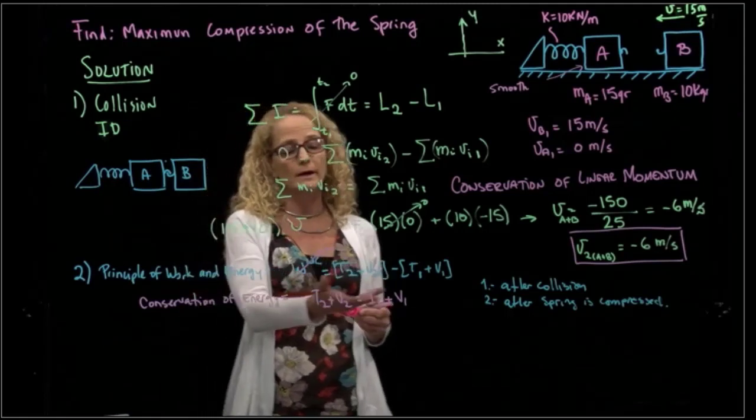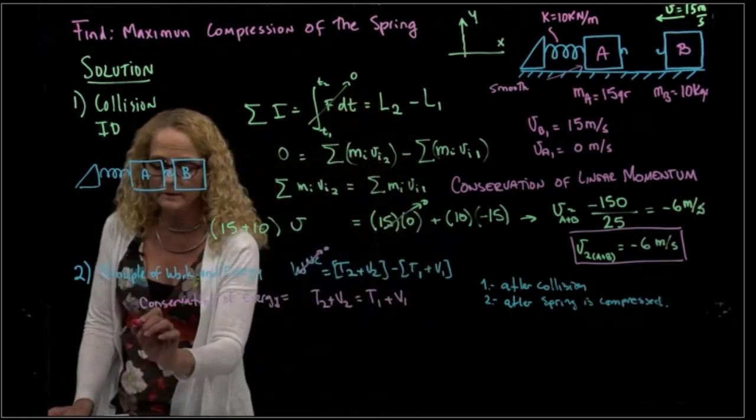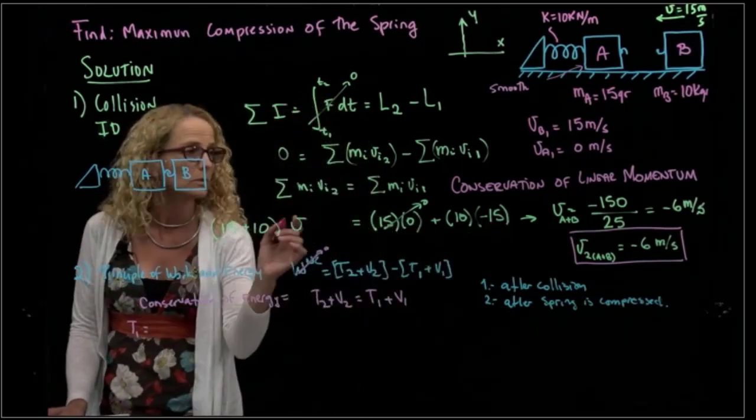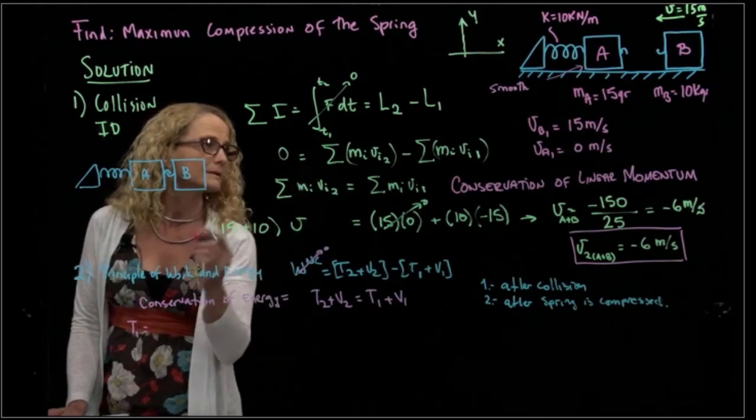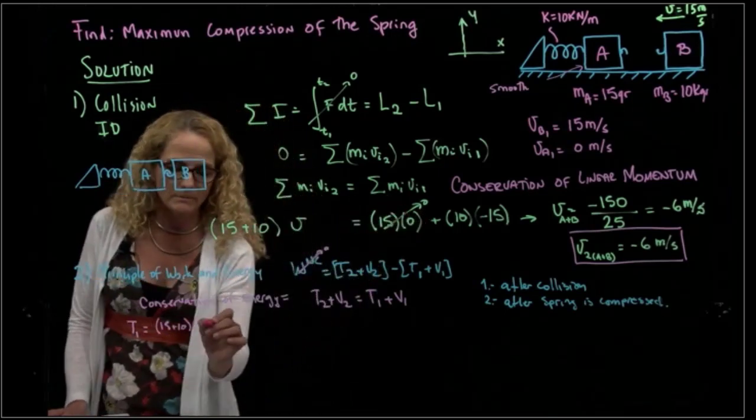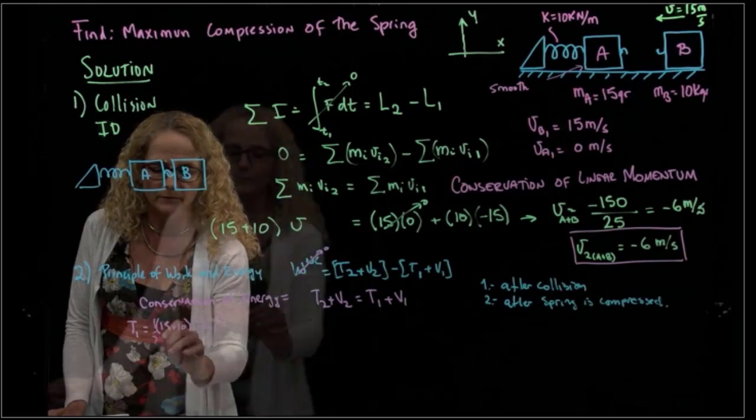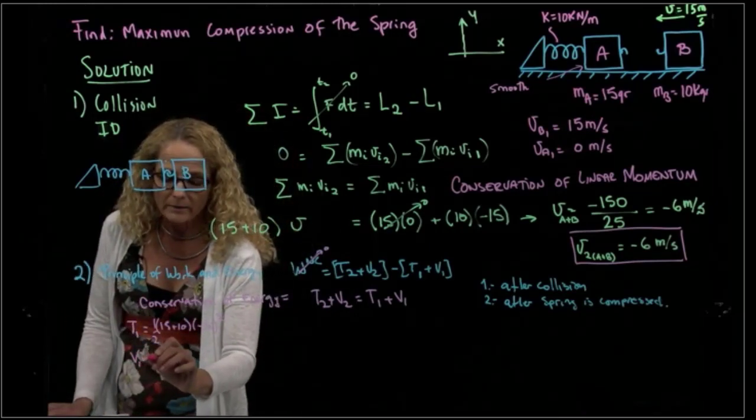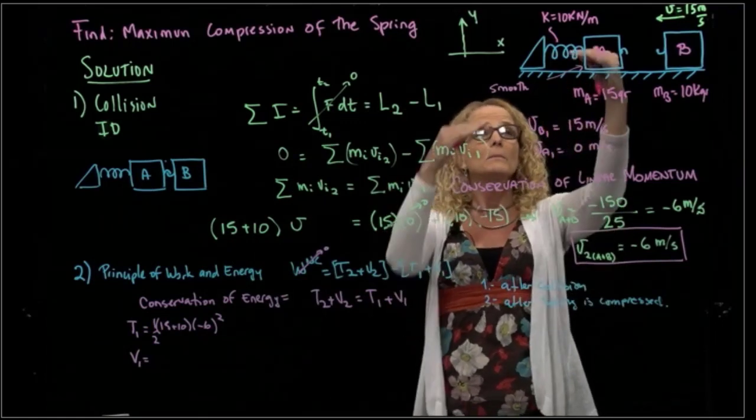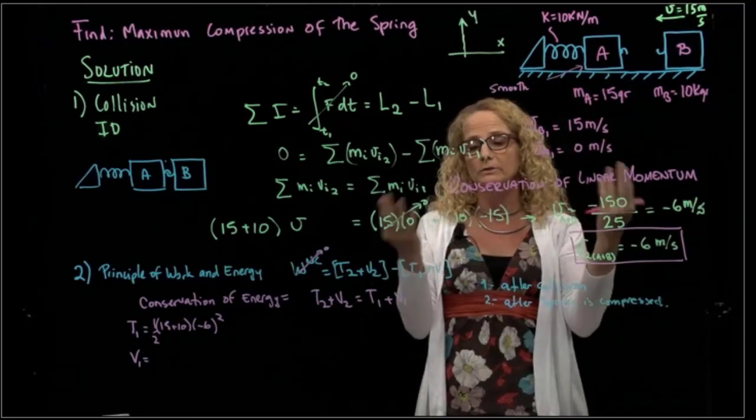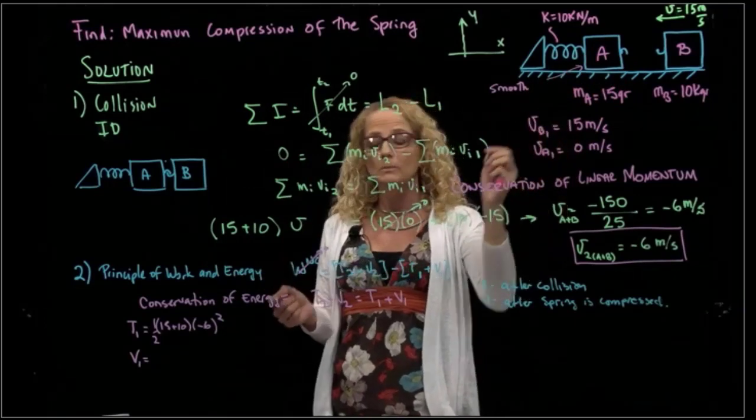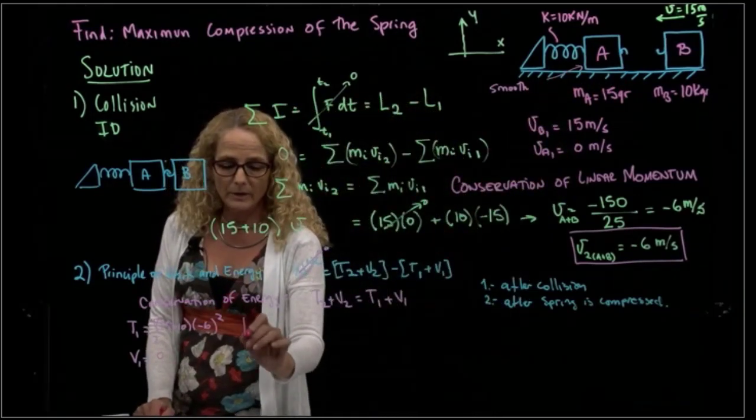So from here, we have to find those values. So here, T1 is equals to that velocity, so it will be equals to both masses together, which is 15 plus 10 times the velocity, which is minus 6 squared. So here, and this is one half, right? V1, the only that accumulates potential energy in this case is the spring, because we are not moving in the y direction because of the gravity. And the spring in stage one, right after collision, is not compressed yet, so V1 is zero.